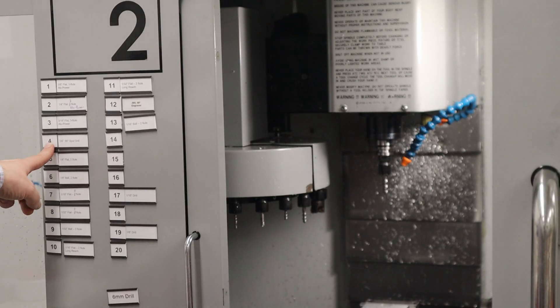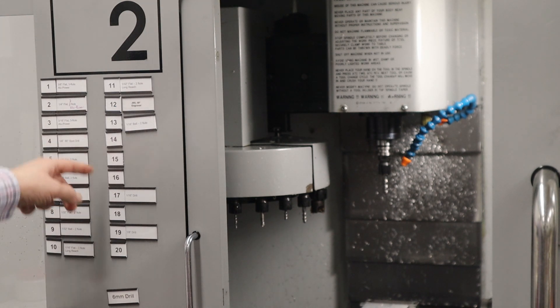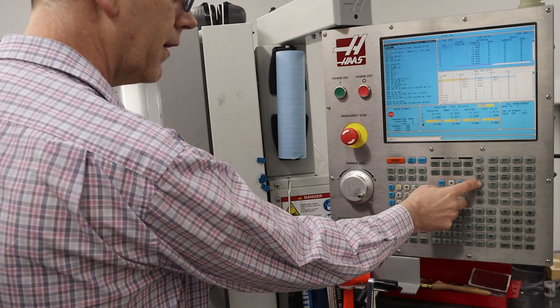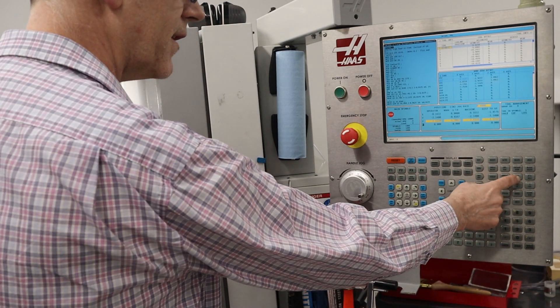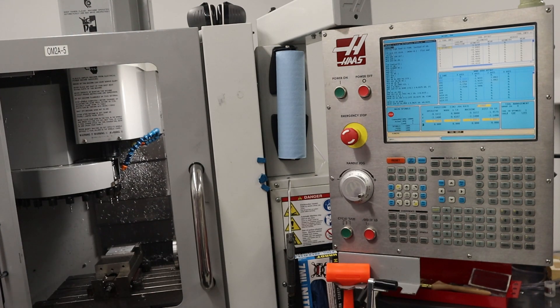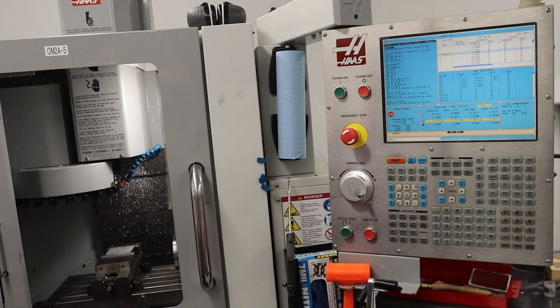So my spot drill is number 4, 1 1⁄4 inch spot drill. I'll go to hand jog, press T4, and then ATC forward.